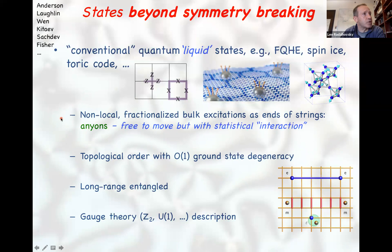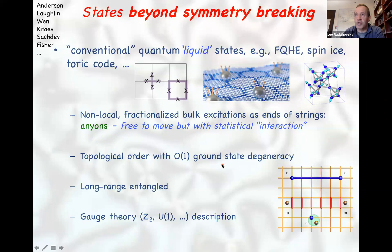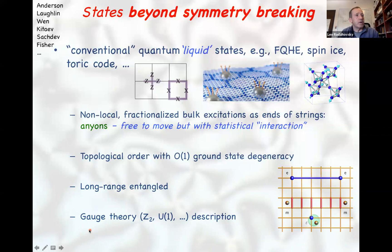These models generally exhibit non-local fractionalized quasi-particles that appear at the ends of strings — anyons that are free to move but with statistical interactions. These models also exhibit topological order, and along with that comes ground state degeneracy when solved on a non-trivial manifold like a torus or with periodic boundary conditions. The ground states are long-range entangled and are described by some kind of gauge theory.